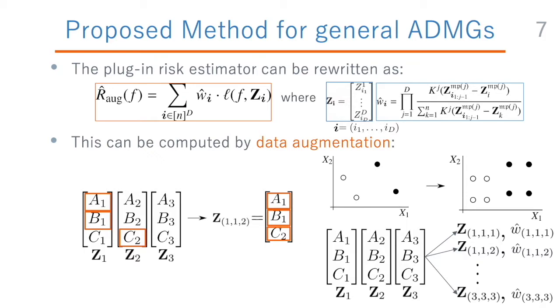After obtaining the augmented data set and the instance weights, we can simply train a predictor using them by any supervised learning method as long as it supports instance-weighted learning. This procedure, actually, coincides with the initial data augmentation idea that was described in the trivariate example in the earlier slide.